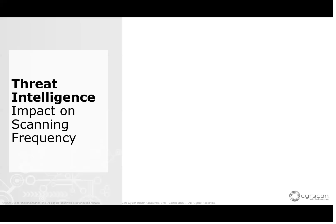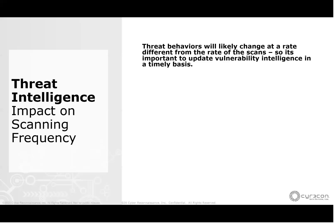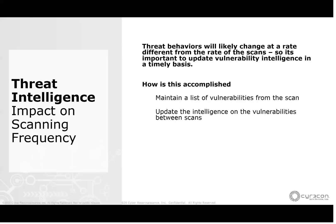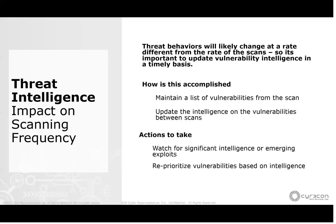This leads to how threat intelligence impacts vulnerability scanning frequency. If you're doing periodic scans but your ability to analyze is greater than your ability to scan, you can still understand changes to threat between scans. You maintain a list of vulnerabilities from the scan, then update the intelligence associated with those vulnerabilities between scanning times. The key action is watching for when intelligence is significant or there's evidence of an emerging exploit, and reprioritizing on the fly.